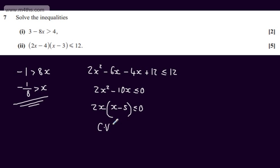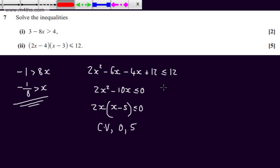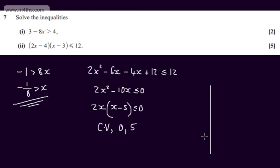Considering the critical values, we'll have 0 and 5. I'm just going to draw a quick sketch. You certainly don't have to, but this might help you out, and then we can go ahead and solve this inequality.